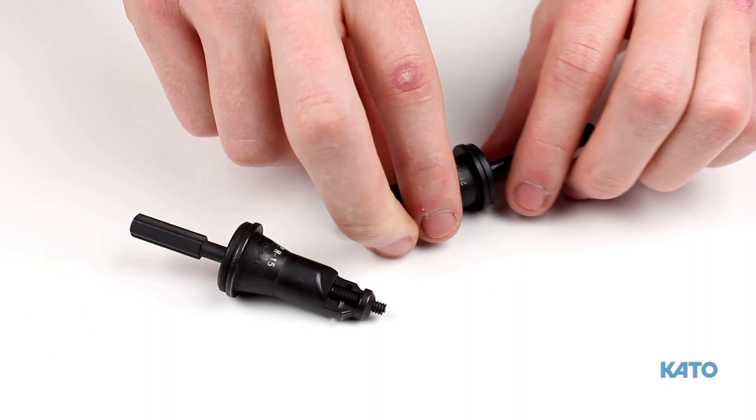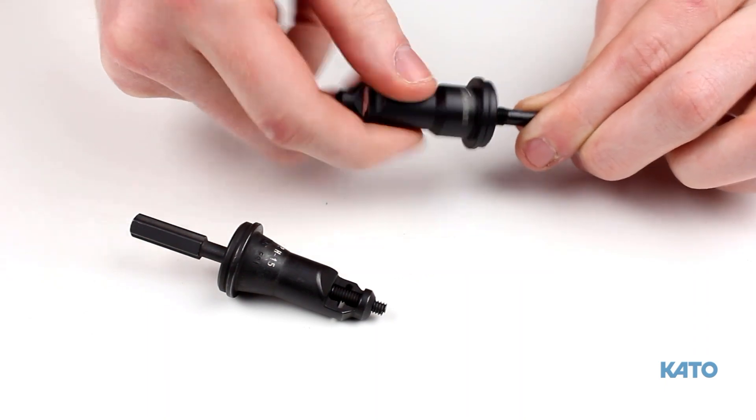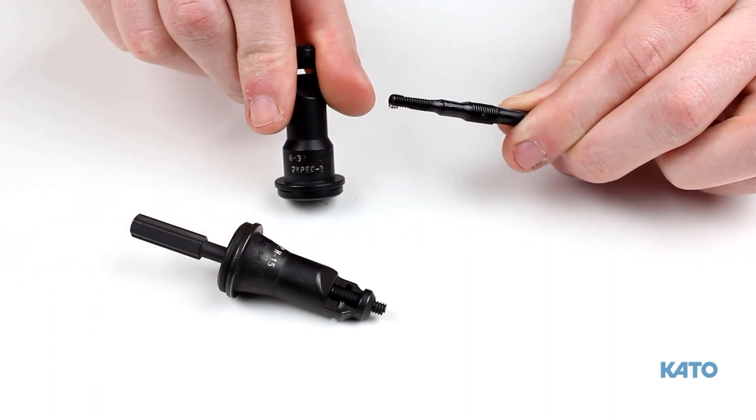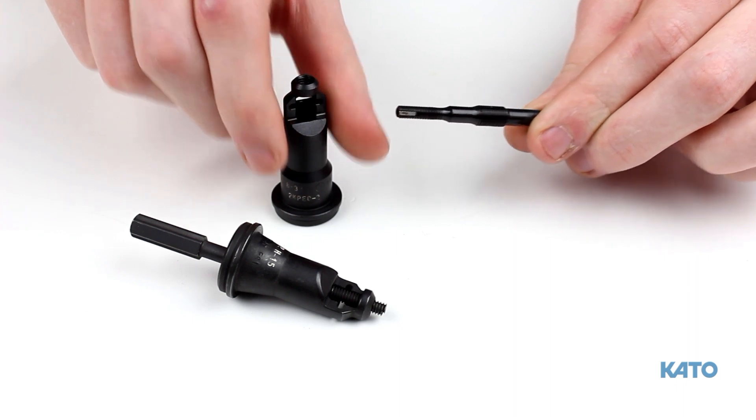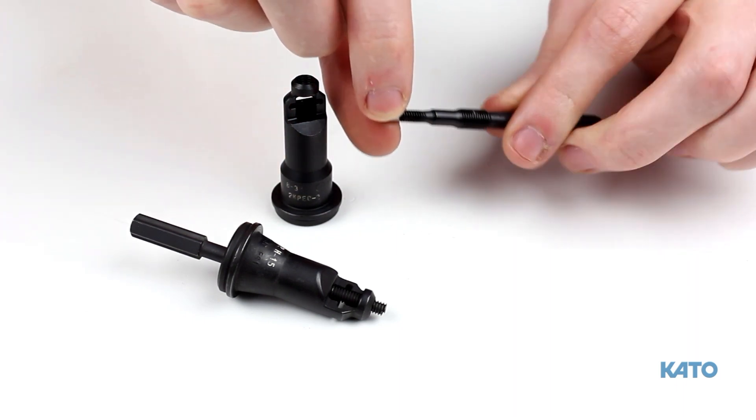The two major components of the front-end assembly are the prewinder body and the mandrel. Note the prewinder body is stamped with the thread size. Inside the tangless mandrel is the spring-loaded pivoting pawl. This is the part that will grab the insert and drive it into the STI tapped hole.